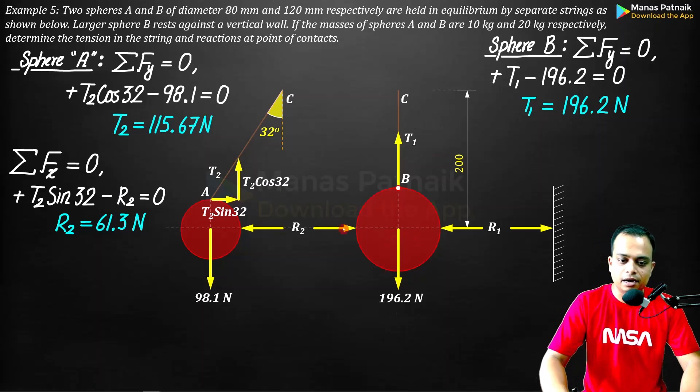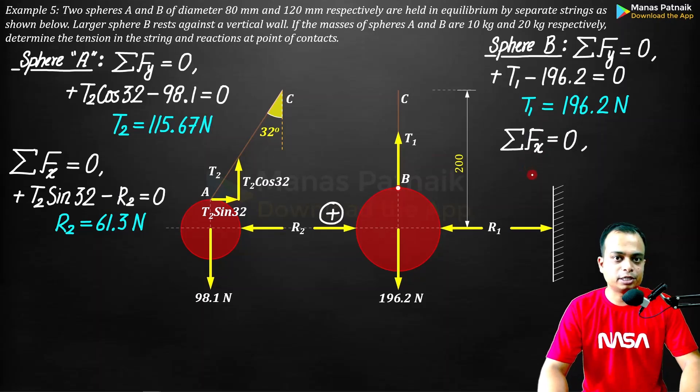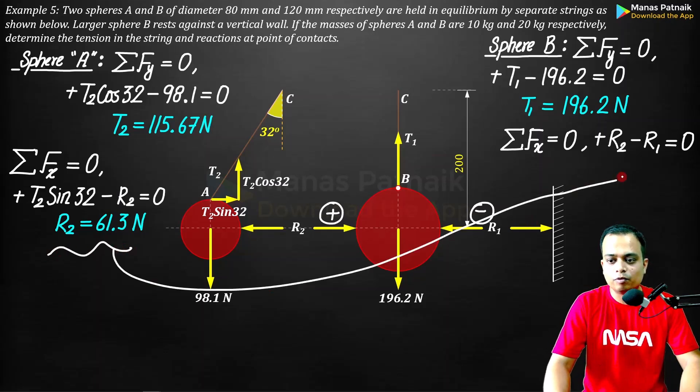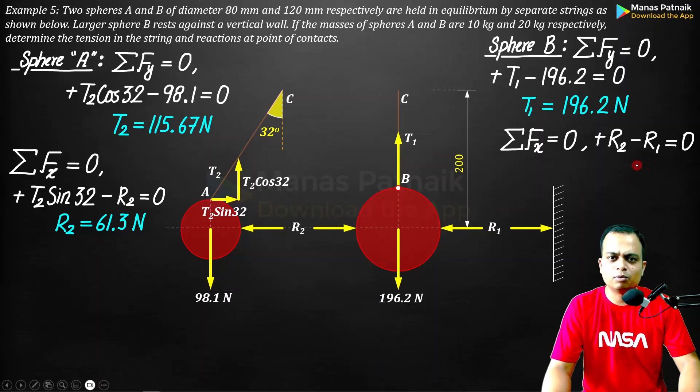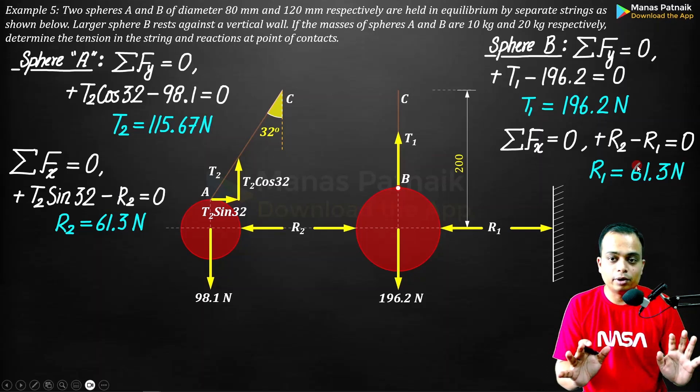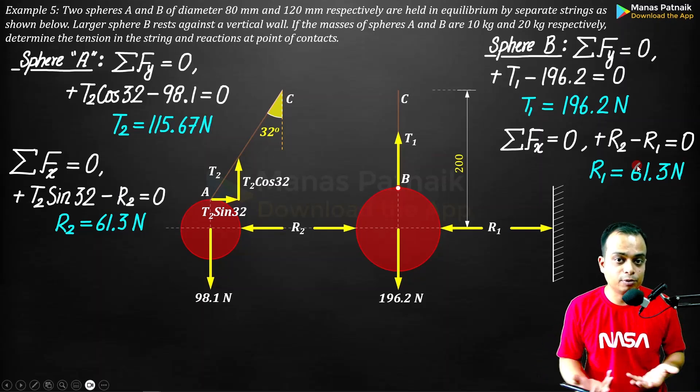For summation Fx equals zero, R2 is to the right and R1 is to the left, so R2 minus R1 equals zero. You already have the value of R2, plug it in and get R1. They're both equal to each other at 61.3 Newtons. That's the final solution. I hope this demonstration will be very intuitive and help you solve many more engineering mechanics problems.